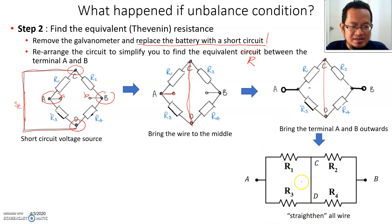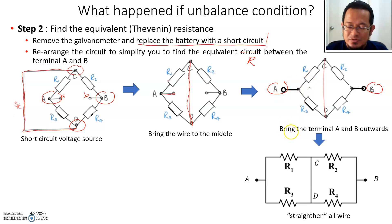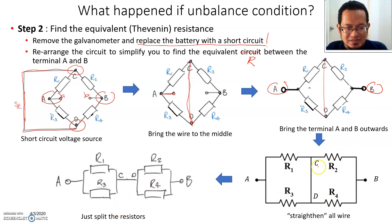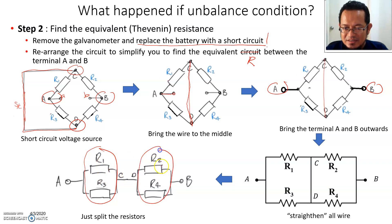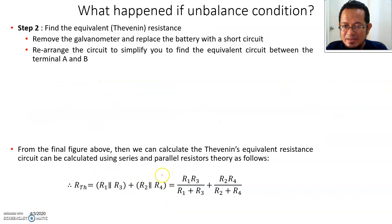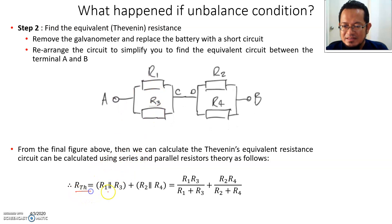After straightening all the wire lines, you want to find the resistance between point A and point B. If you further split the resistance into two, you can see that R1 and R3 are in parallel to each other, and R2 and R4 are in parallel to each other. Then this combination is in series. So you can calculate: R_Thevenin is simply (R1 parallel R3) plus (R2 parallel R4). That is your Thevenin resistance.